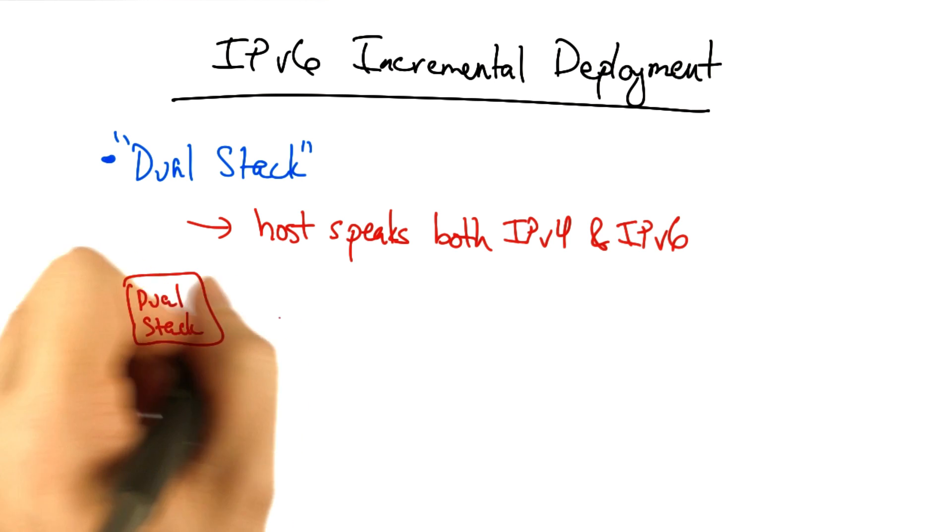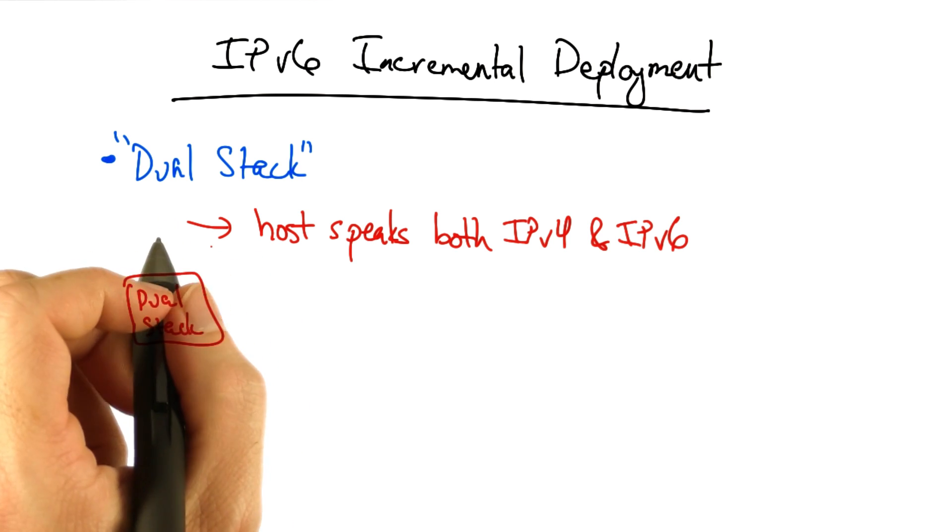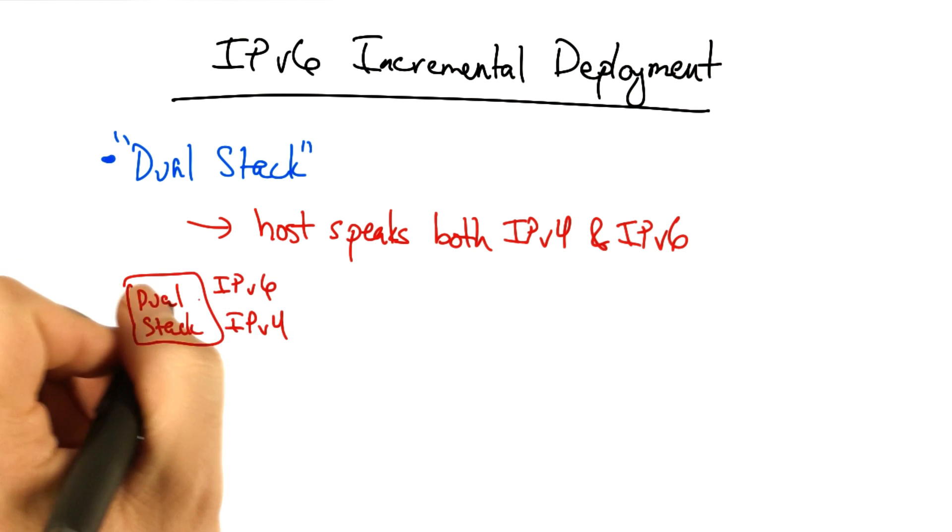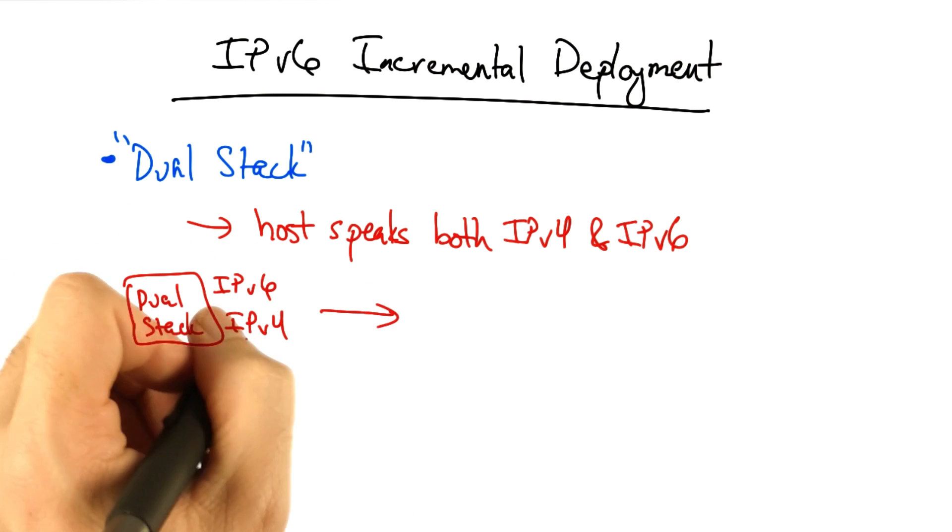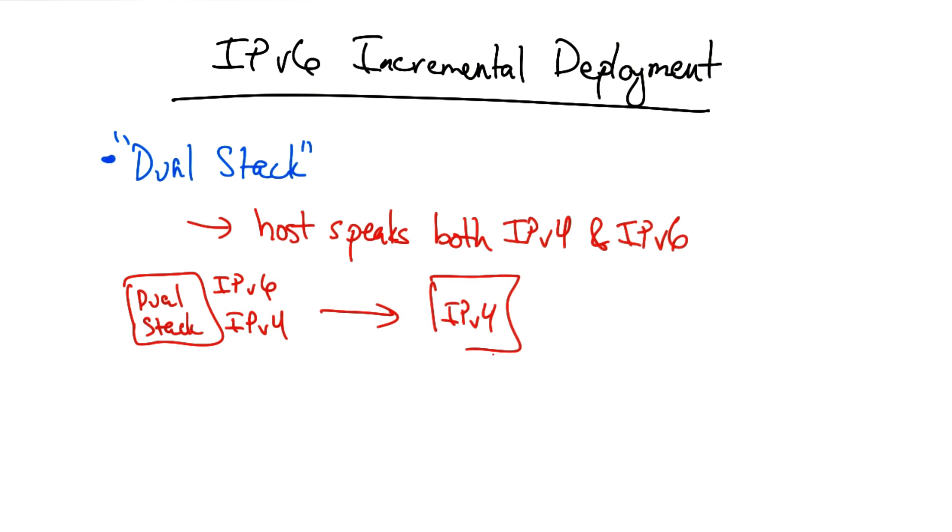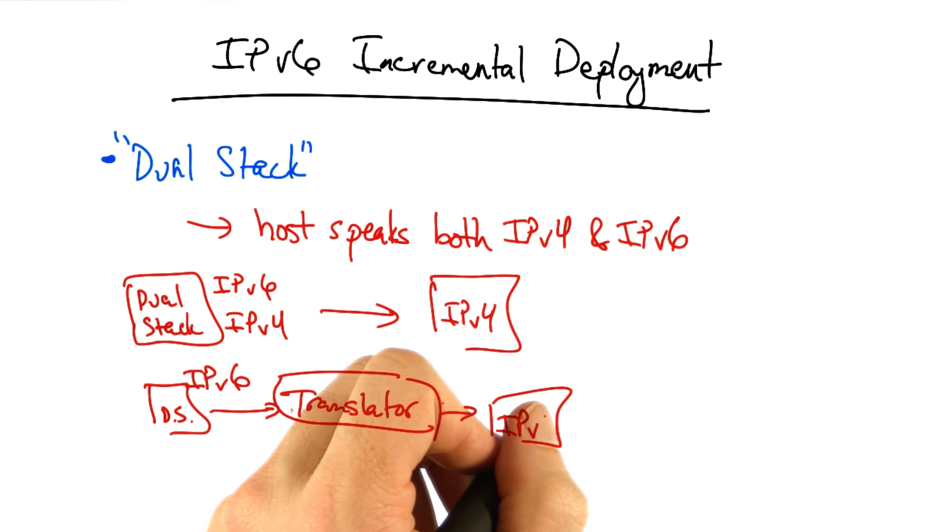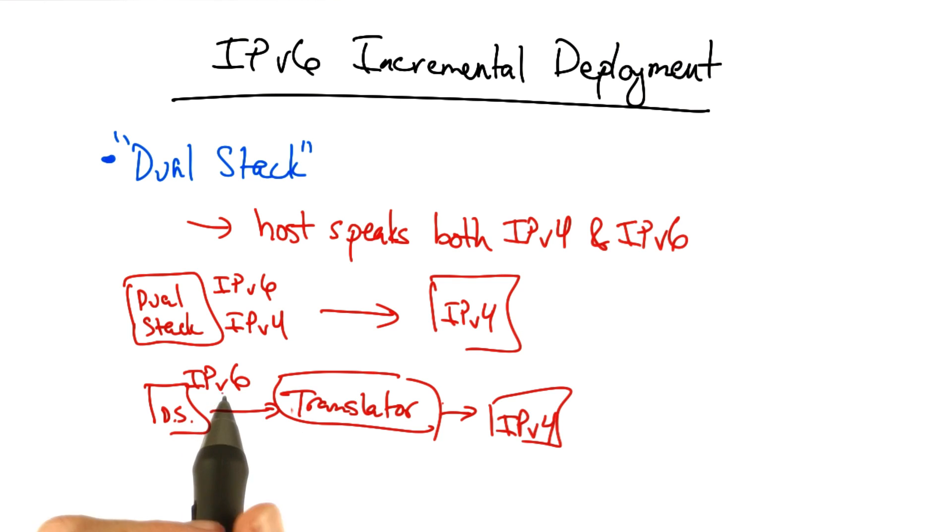What this means is that the dual stack host has to have an IPv4 compatible address. Either the host has both an IPv4 and an IPv6 address, thus allowing it to speak to an IPv4 host, or it must rely on a translator, which knows how to take a v4 compatible IPv6 address and translate it to the v4 address.